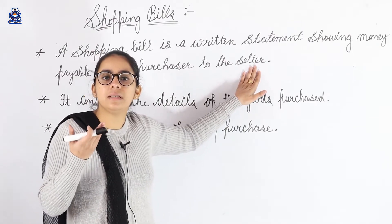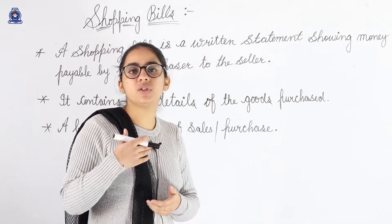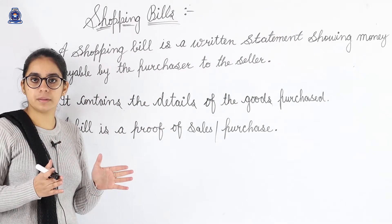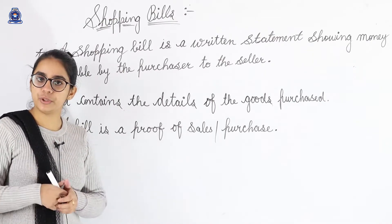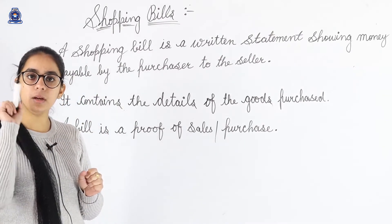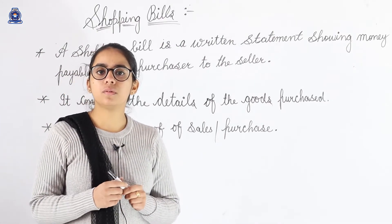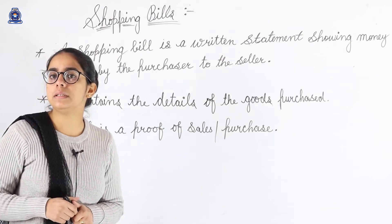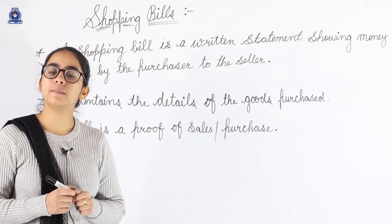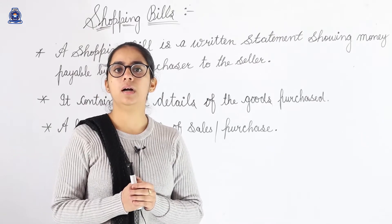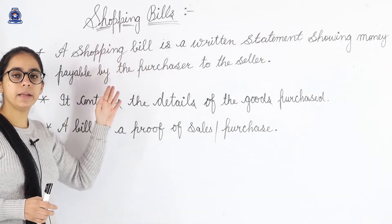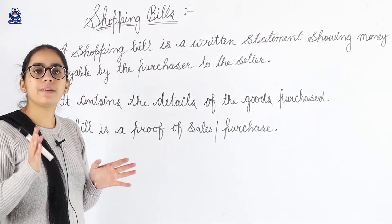Seller kaun hai? Who sells the things — jo samaan bech raha hai, woh seller hai. So bill kya hai? Ek important term hai jiske andar puri information likhi hogi. Sabse pehle, jis shop se aap le rahe hai uska heading hoga, uska address hoga. Uske baad name aur jo seller hai woh aapka name fill kar dega, aur aap ne kitna purchase kiya. Shopping bill is a very important term that you always take from the seller.